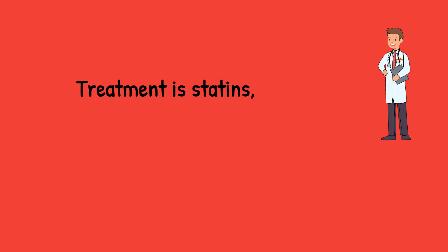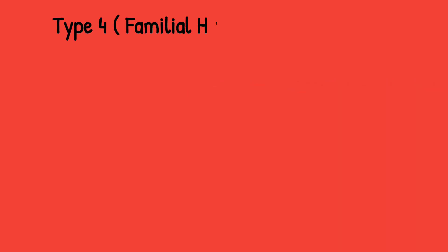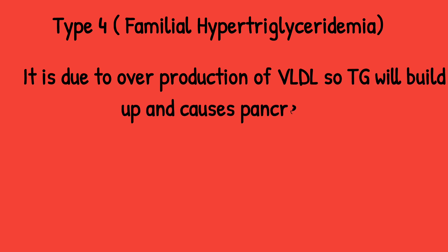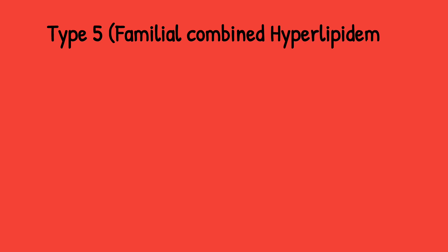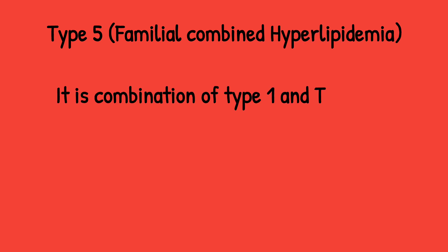Treatment for Type 3, because of VLDL and chylomicron buildup, is statins and fibrates. Type 4 is familial hypertriglyceridemia. It is due to overproduction of VLDL, so triglycerides will build up because VLDL contains TGs. This causes pancreatitis, so always remember that. Treatment: fibrates and statins can also be used.